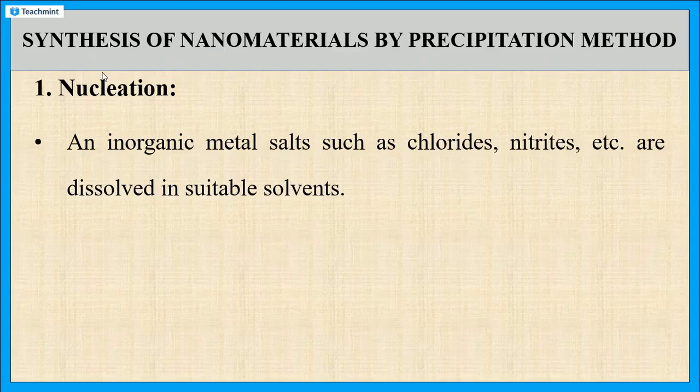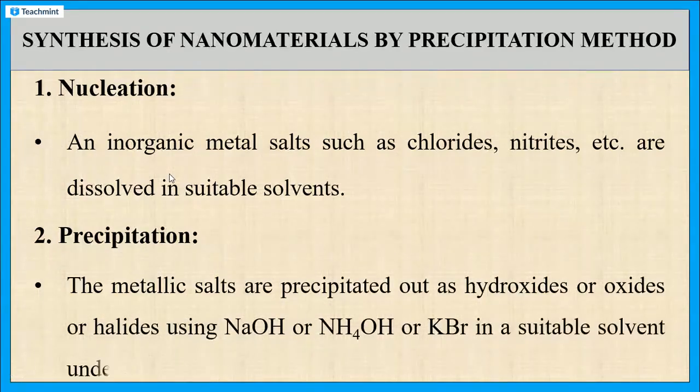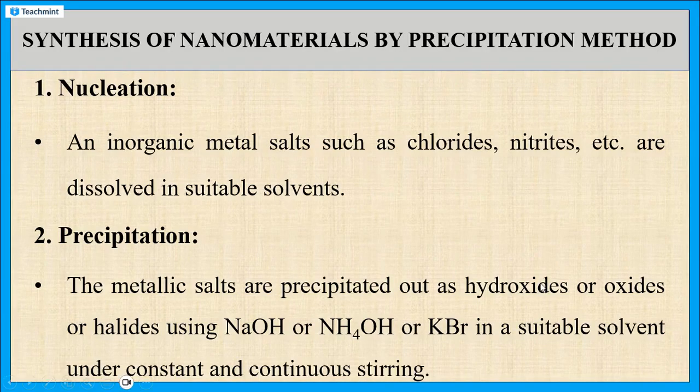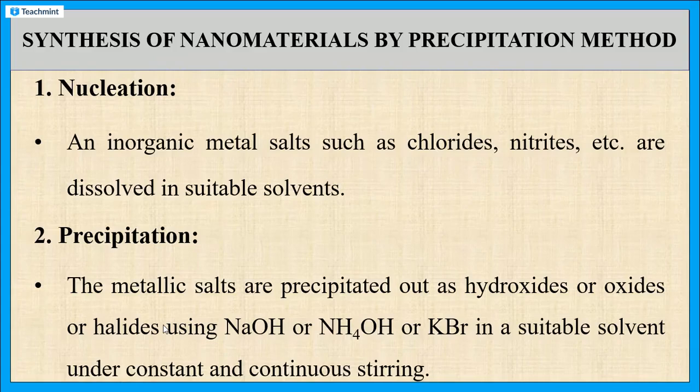The second process is the precipitation process. In this process, the obtained metallic salts are converted into precipitates in the form of either hydroxides or oxides or halides using sodium hydroxide or ammonium hydroxide or potassium bromide with continuous stirring.